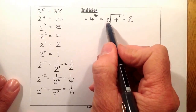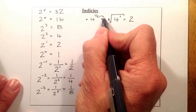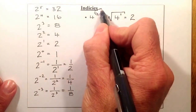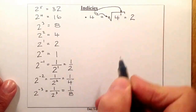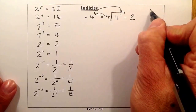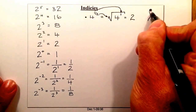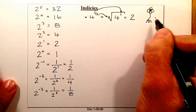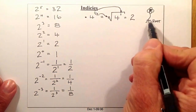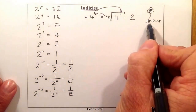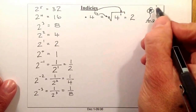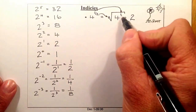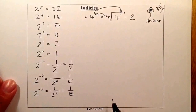If you're concerned about where the numbers go — the number on the bottom of the fraction goes to the root sign, and the number on the top goes up as a power — you can think of it as a flower. The root of the flower is at the bottom, so the denominator goes to the root sign. The sun powers the top of the flower, so the numerator becomes the power.